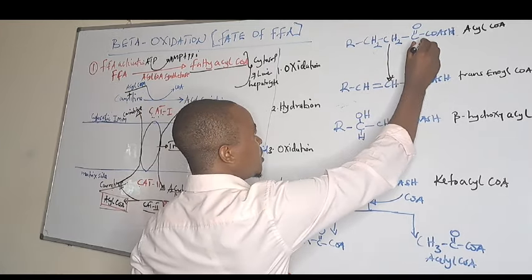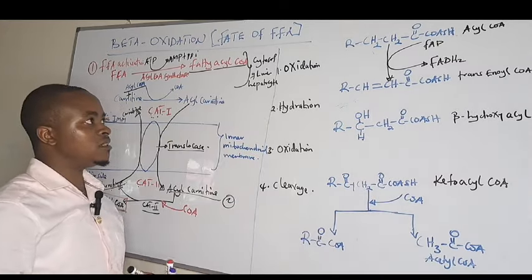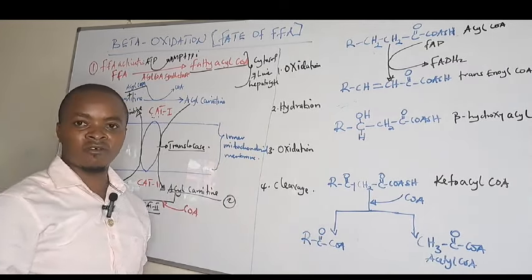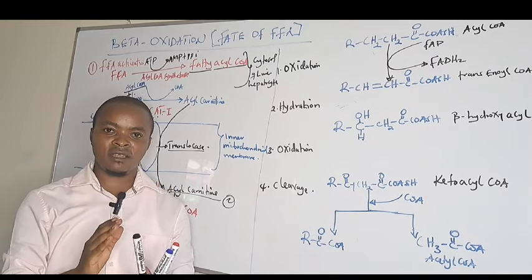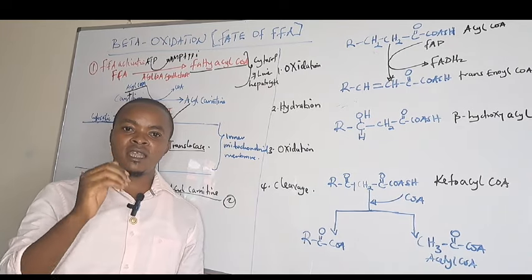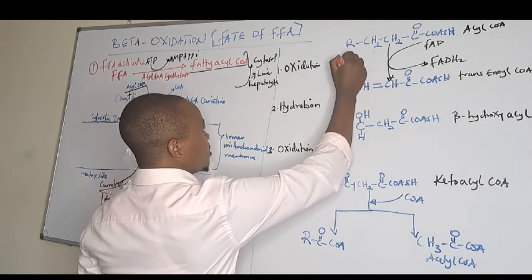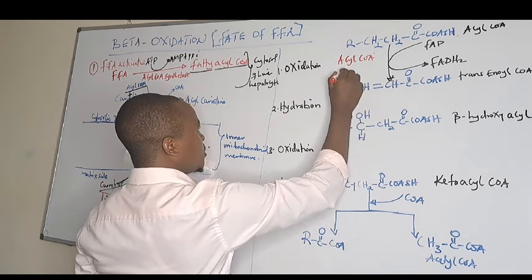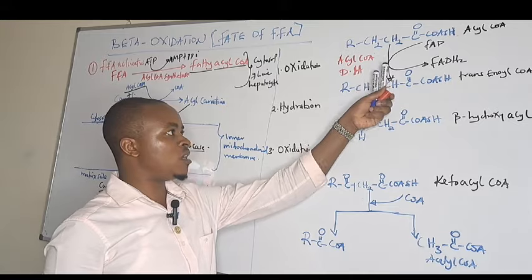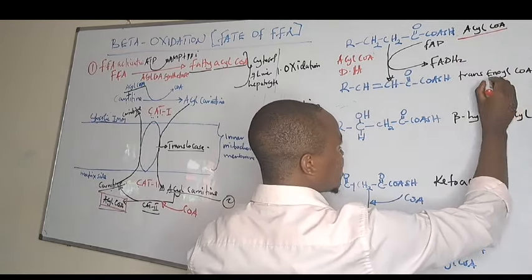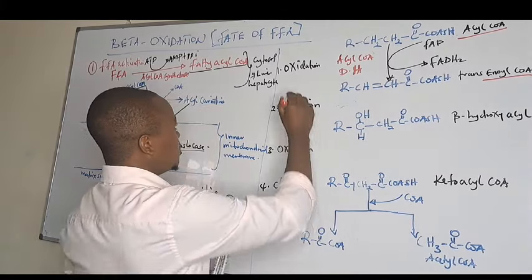This oxidation occurs in the presence of FAD, which is reduced to FADH2. Whenever you see FAD or NAD involved, think of a dehydrogenase enzyme — named according to the substrate it catalyzes. Here the enzyme is acyl-CoA dehydrogenase, which catalyzes the oxidation of acyl-CoA to trans-enoyl-CoA. We call it enoyl-CoA because it has an ene group in it.